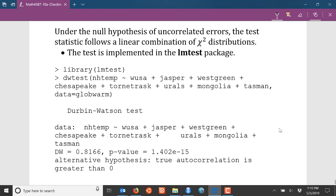Under the null hypothesis that the errors are uncorrelated, then the test statistic should be a linear combination of chi-square distributions. In fact, this test is implemented in the lmtest package. After installing that package, we can load it using the library function. Then to perform the Durbin-Watson test, we use the dwtest function here, where we specify the regression model that we want to fit.